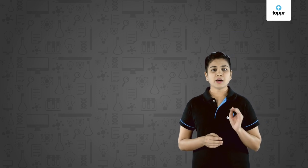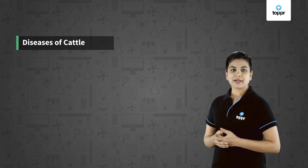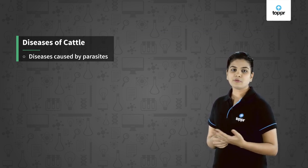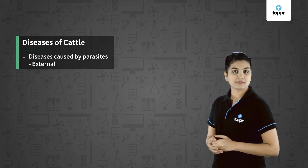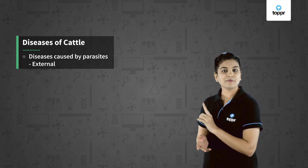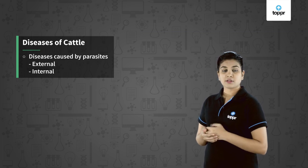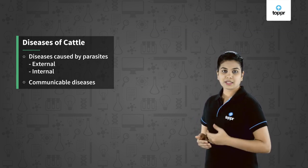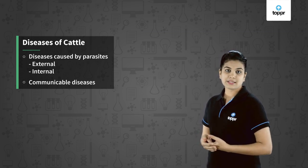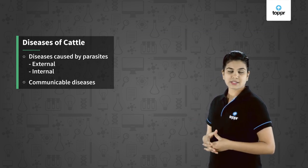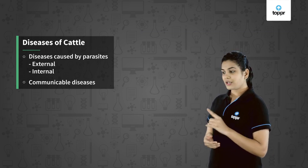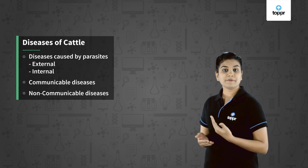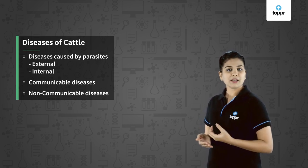There are a number of cattle diseases, which can be broadly classified into a few categories. First, diseases caused by parasites, which can be of two types: external parasites like lice, ticks, and worms that cause skin diseases, and internal parasites like worms that cause internal diseases. Second, communicable diseases caused by pathogens such as bacteria, fungi, or viruses. Third, non-communicable or non-infectious diseases, which occur mainly due to deficiency of some nutrients or malfunctioning of a body organ.